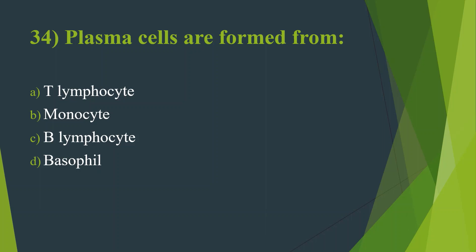Thirty-fourth question: Plasma cells are formed from — Option A, T-lymphocyte. Option B, Monocyte. Option C, B-lymphocyte. Option D, Basophil. Answer is Option C, B-lymphocyte.